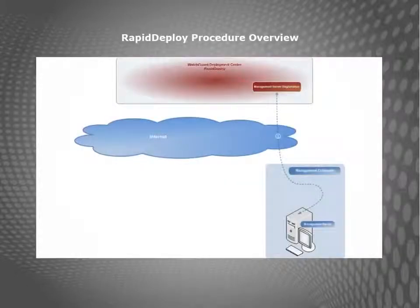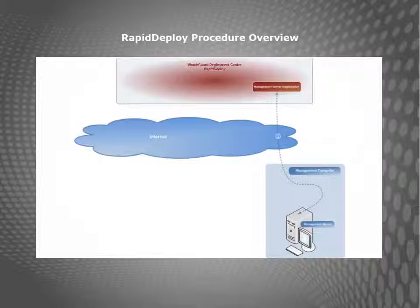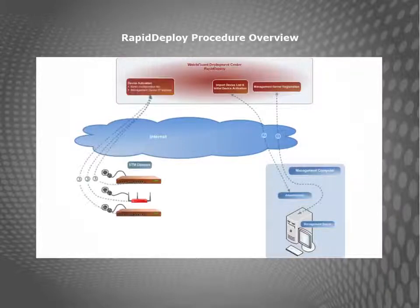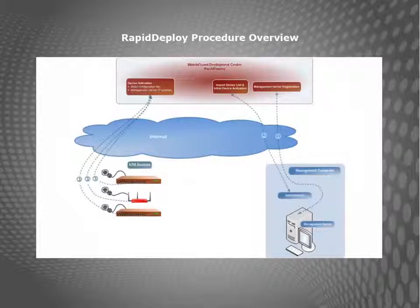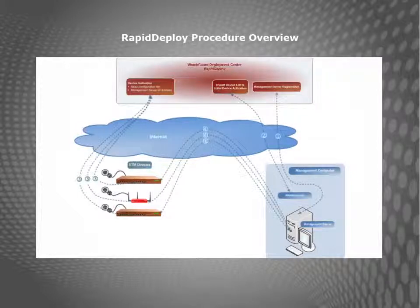The diagram here illustrates the Rapid Deploy from the Management Server procedure, which starts with registering your management server with the WatchGuard portal, and then logging in to the WatchGuard Deployment Center to verify whether your management server registration was successful. Then you'll navigate to the Deployment Center and import your list of Firebox or XTM devices. When you connect those devices to power and the internet, each device contacts the Deployment Center to download a basic configuration file that identifies the management server. Each device then contacts the management server, which contacts the Deployment Center to verify that the device has been activated and assigned to the management server.